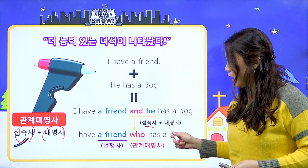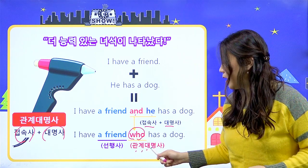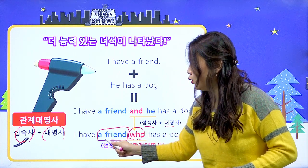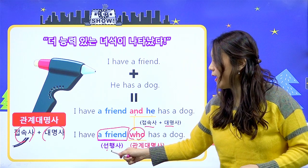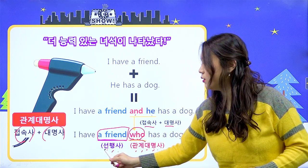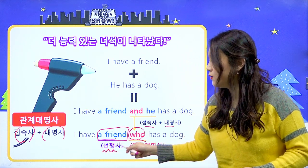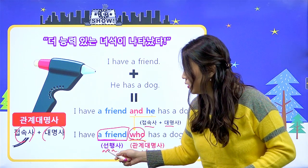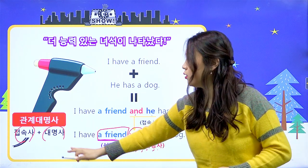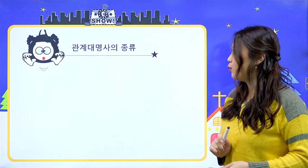영어에서는 짧을수록 심플할수록 그런 것들을 추구하기 때문에 이런 접속사도 굉장히 많이 쓰여요. 이 접속사를 우리는 관계대명사라고 부를 겁니다. 관계대명사란 접속사와 대명사가 합해진 아이를 관계대명사라고 불러요. and와 he가 합해져서 who가 되었죠. 그래서 이 아이는 관계대명사인 겁니다. 그리고 관계대명사 앞에 있는 'a friend'라는 명사를 선행사라고 부를 거예요. 선행사란 먼저 왔다라는 뜻이에요.